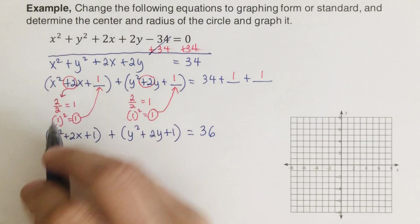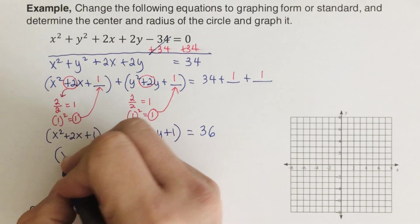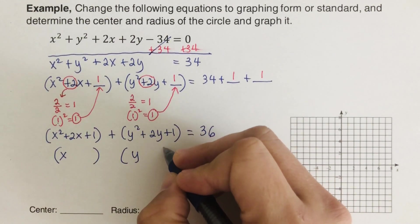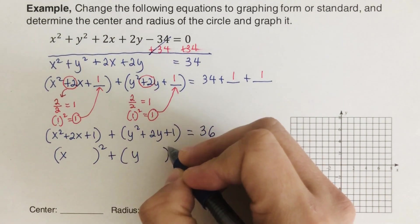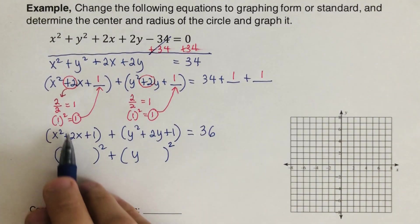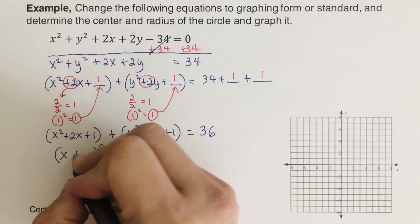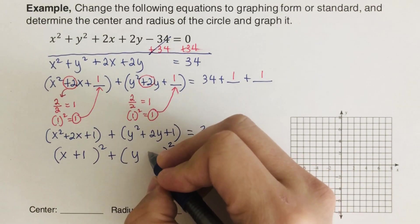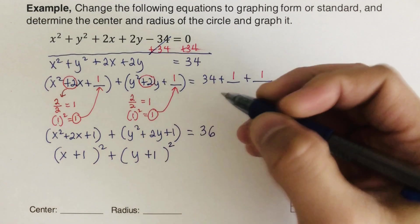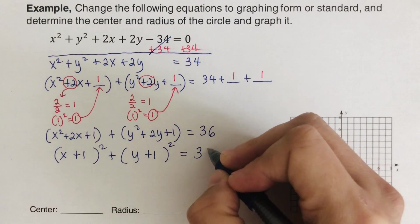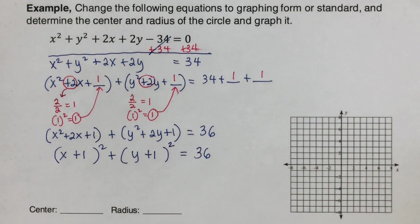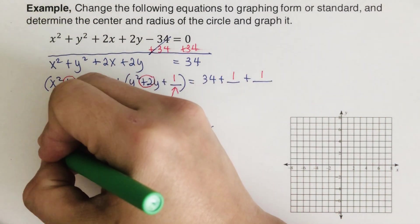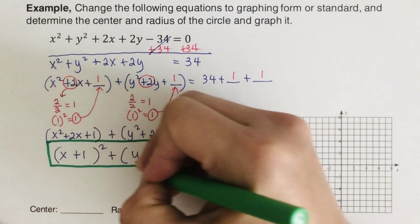Since each group is a perfect square trinomial, using the trick we can immediately write the factored form. The number from the x completion was 1 so we get (x plus 1) squared, and the number from the y completion was 1 so we get (y plus 1) squared. The graphing form is (x plus 1) squared plus (y plus 1) squared equals 36.